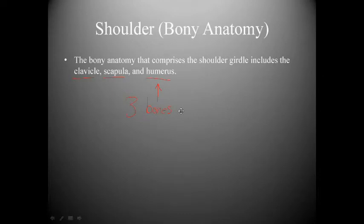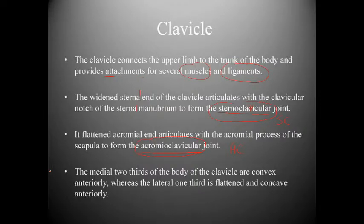Looking at the upper extremity, we begin with the shoulder, which is comprised of three bones: the clavicle, scapula, and humerus. These are the three bones that make up the shoulder girdle.